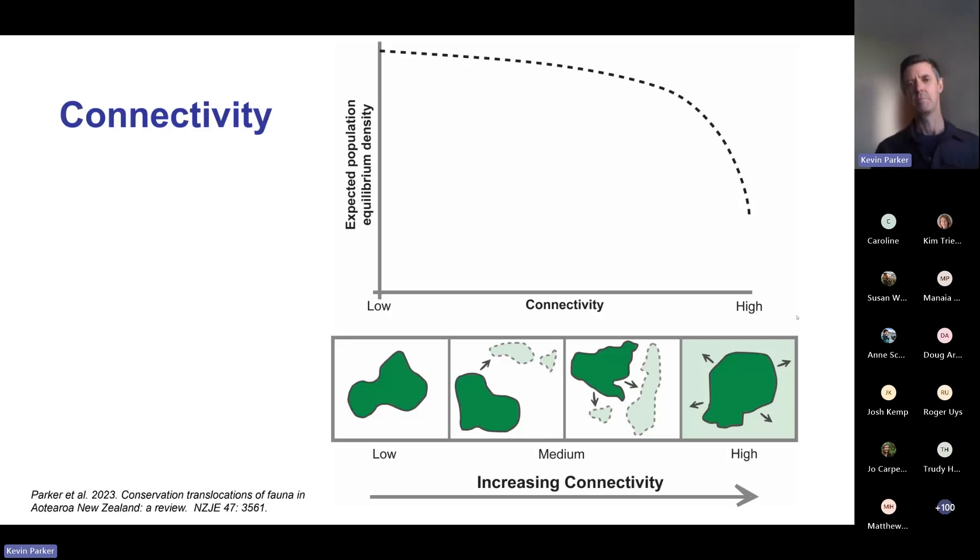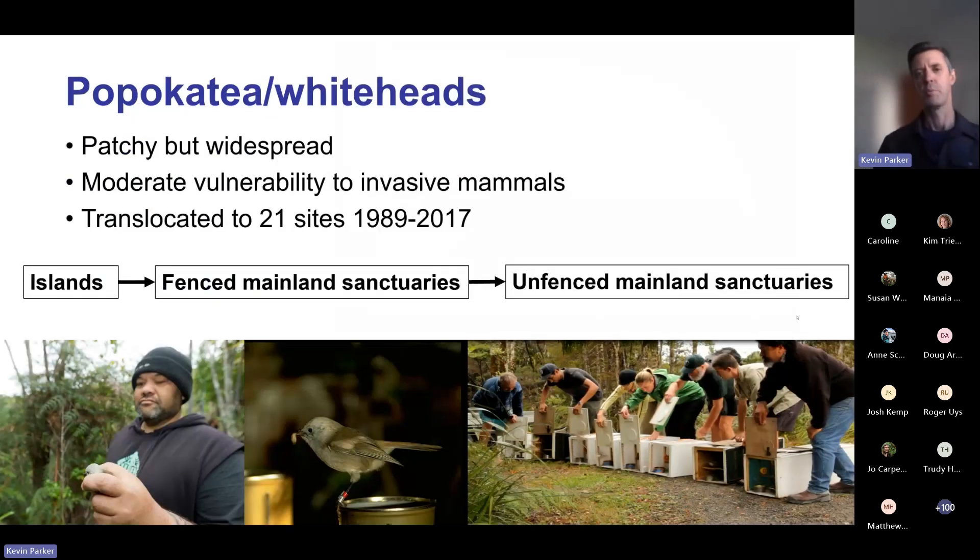This brings me to popocatia or whiteheads. They're a wonderful little bird once distributed right across forested and scrub habitats in the North Island, but they now have a much more restricted distribution. They've tended to persist in higher, wetter, colder places in line with work by Susan et al. They clearly have moderate vulnerability to invasive mammals - ship rats are almost certainly the biggest problem, although stoats and cats will also take them.